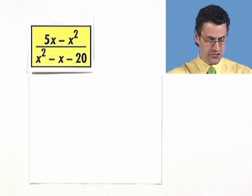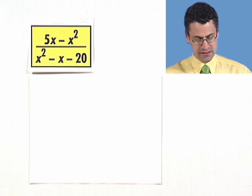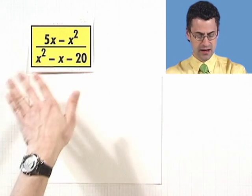Let's take a look at another example. So here I've got 5x minus x squared divided by that quadratic.